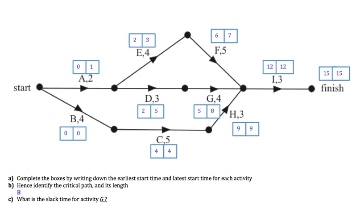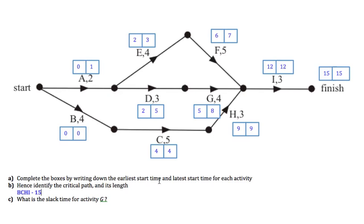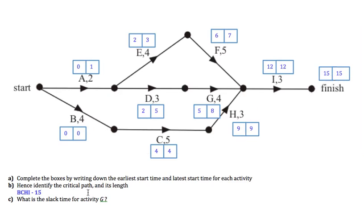The length of the critical path is the sum of all the durations: 4 plus 5 is 9, plus 3 makes 12, plus 3 makes 15. We knew that because it matches the overall project completion time — the critical path always gives you the overall completion time. Note as well, we could have answered this without setting up the boxes since there were only three paths from start to finish. For small networks, you can simply identify the longest path; it only gets tricky with many paths.